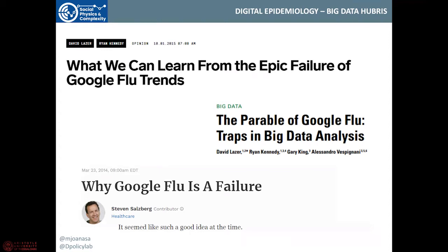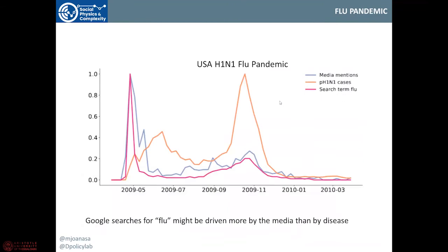The truth is there are many reasons why people would search for diseases or symptoms online. It can be because they are sick, but it can also be because they are curious, because they are afraid, or just because the media mentions it a lot. If you look back at 2009, in orange you see the number of cases for the H1N1 pandemic, and in pink you see the search terms for flu. They peak not when the cases peak, but when the WHO declared the pandemic. And that's also when news frequency mentioning H1N1 and flu peaked as well.